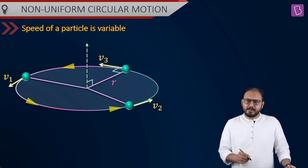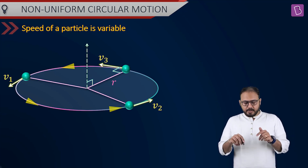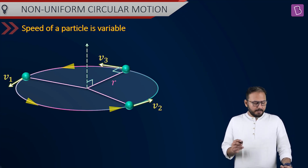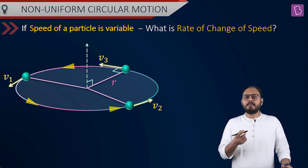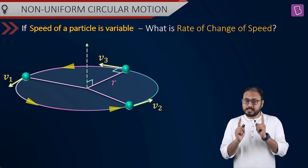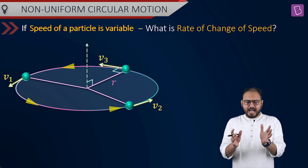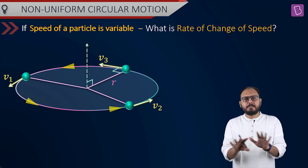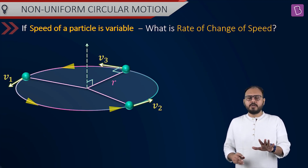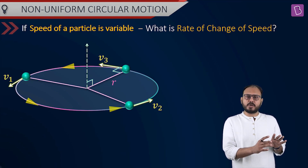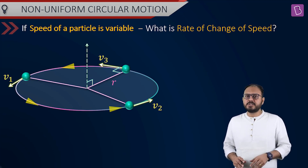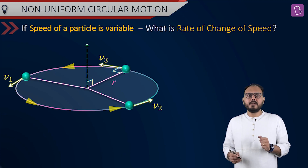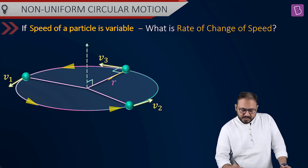What is happening in non-uniform circular motion? Even the magnitude is changing. So direction is changing and magnitude is also changing. Let me keep them separate — the direction change of velocity separate from the magnitude change. Who is responsible for direction change? Still centripetal — perpendicular to velocity, radially inwards.